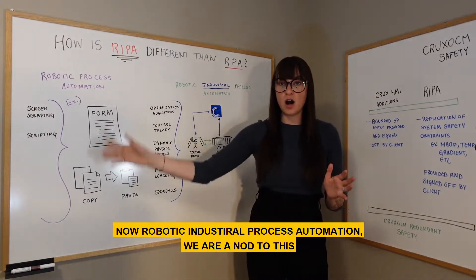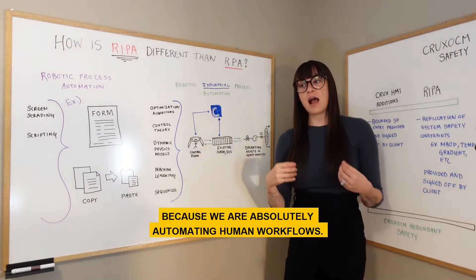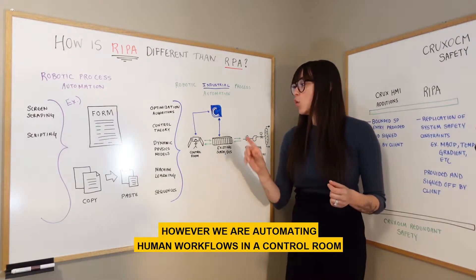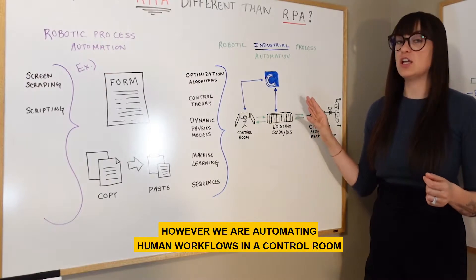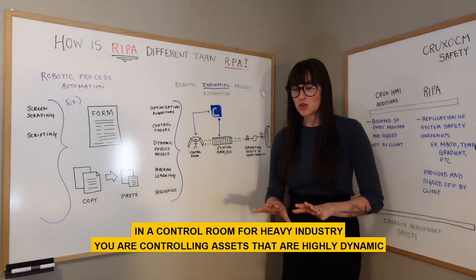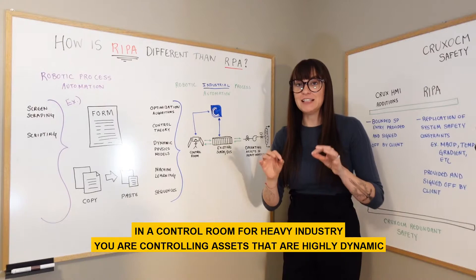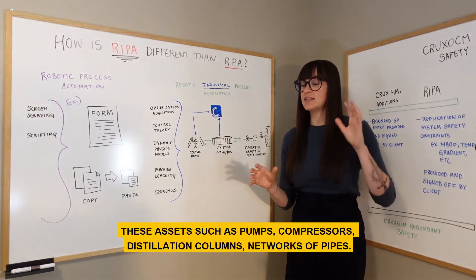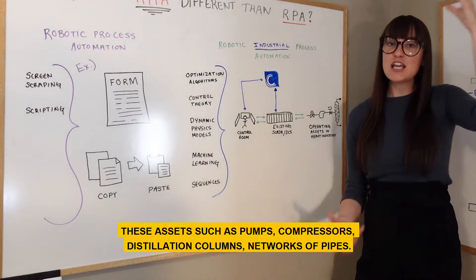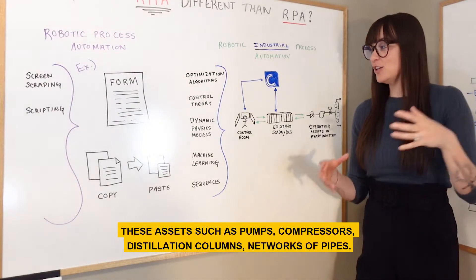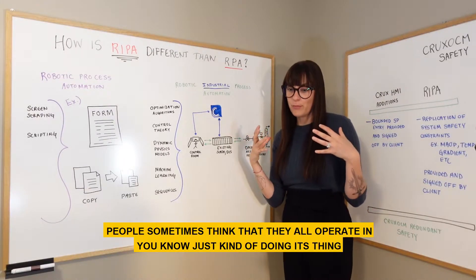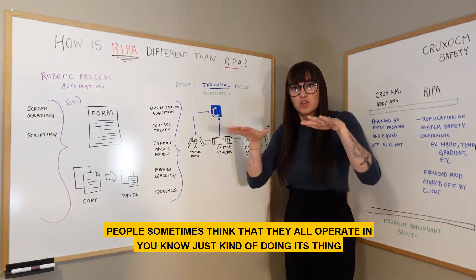Robotic industrial process automation is a nod to this, because we are absolutely automating human workflows — however, we are automating human workflows in a control room. In a control room for heavy industry, you're controlling assets that are highly dynamic: pumps, compressors, distillation columns, networks of pipes.